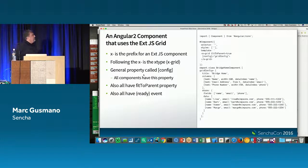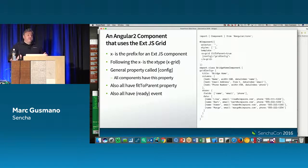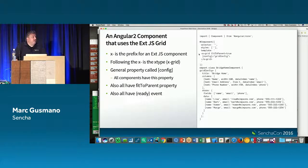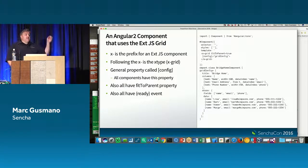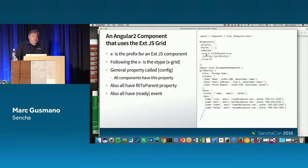How would you use one of these components? Here's a simple example using the Ext grid. We chose to use 'x' as the prefix identifier for the bridge products — just like in the React session it was 'x-something'. So for a grid it's 'x-grid'. You close it with a closing tag. Inside that component you can have properties and events, and ultimately call methods.